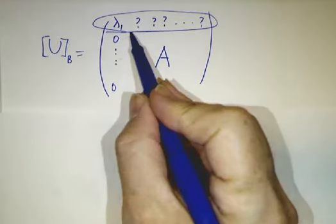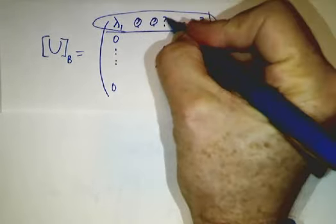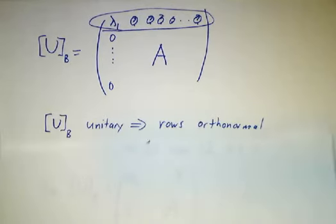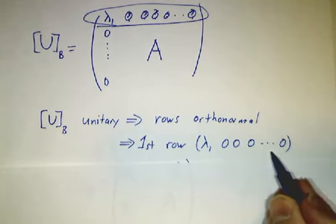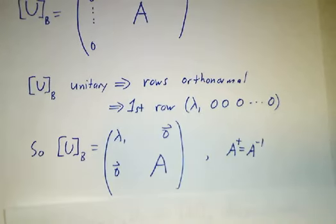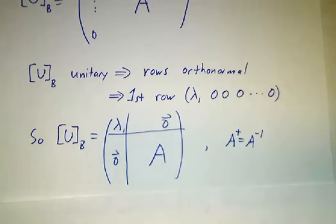The only way the first row can be a unit vector is if the rest of the first row is nothing but zeros. So the first row has to be λ100000000. And that means that our matrix now is block diagonal.